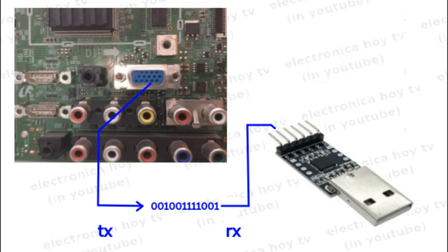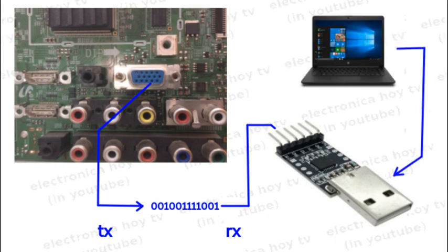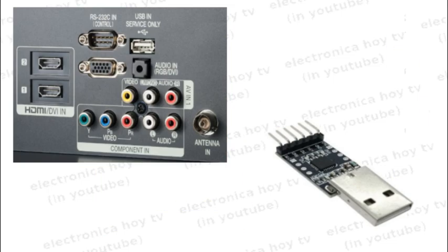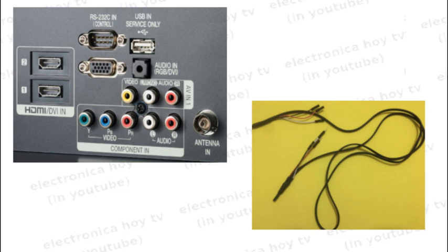Igualmente, la información enviada por el computador hacia el televisor saldrá del dispositivo de interfase por el terminal TX o transmisión, e ingresará al televisor por el punto RX o de recepción. Como los puertos en el televisor pueden ser unos u otros, podemos elaborar un cable intercambiable como el que podemos apreciar en la ilustración, utilizando los jumpers adecuados para cada caso.